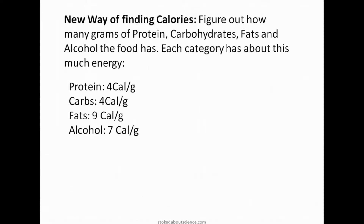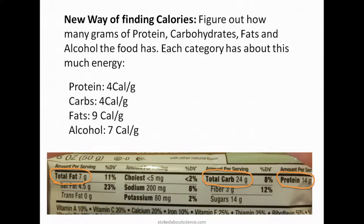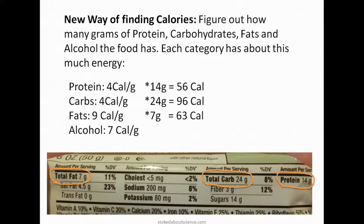Nowadays food scientists don't even burn food, because they've done it enough that they know from their data that protein gives off about four calories per gram, carbohydrate about four calories per gram, fat about nine, and alcohol about seven. So they just need to figure out how many grams of protein, carbs, and fats are in the food. For example, this nutrition bar has seven grams of fat, 24 grams of total carbs, and 14 grams of protein — multiplying by the energy of each category gives 56, 96, and 63, for a grand total of 215 calories.